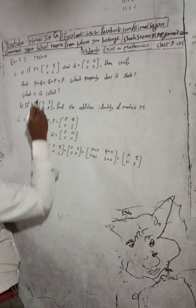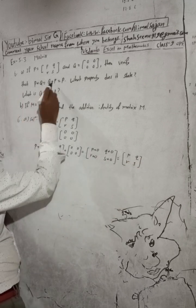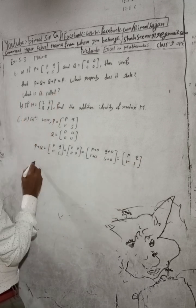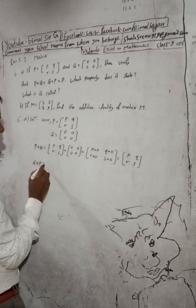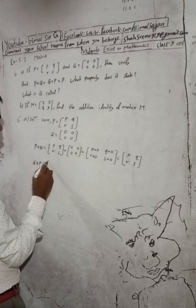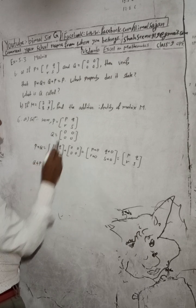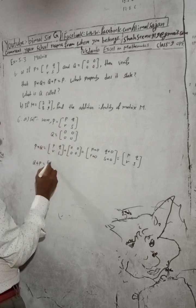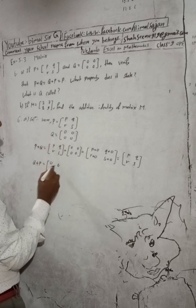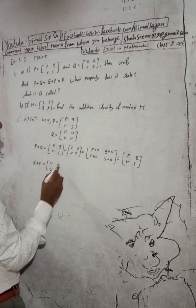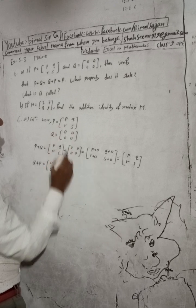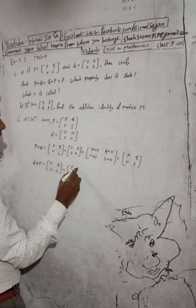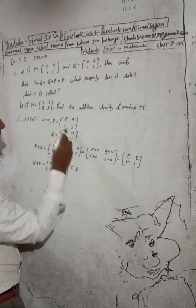In the same way, now Q plus P — so first Q and then plus P. Q means the zero matrix [0, 0, 0, 0, 0], plus P means [p, q, r, s]. So this gives us 0 plus p, 0 plus q, 0 plus r, 0 plus s.